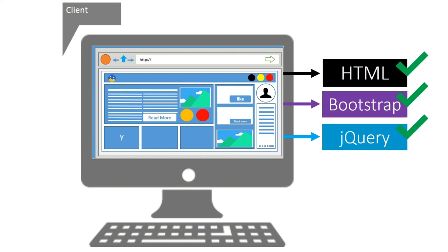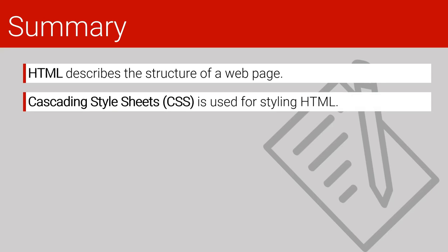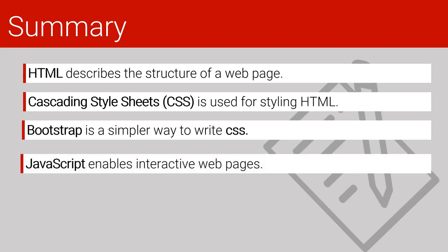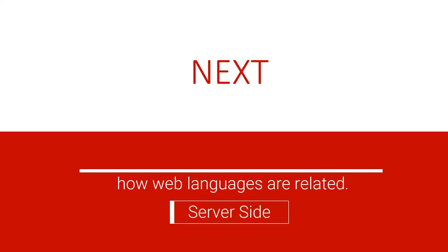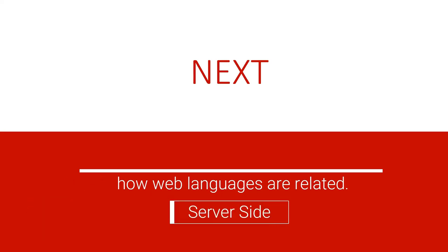So jQuery is that powerful and that's why we shall include it in this web course. Instead of going deep into JavaScript first, we shall learn jQuery. Let us summarize what we discussed in this lecture: HTML describes the structure of a webpage. CSS stands for Cascading Style Sheets and is used to style the HTML. Bootstrap is a simpler way to write CSS. JavaScript enables interactive web pages. In the next lecture, we are going to learn how web languages are related to each other on the server side. Please subscribe, like, and share. Thank you for watching.